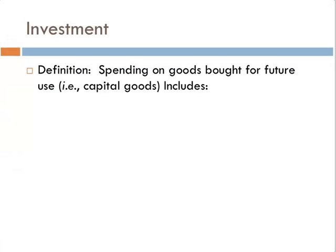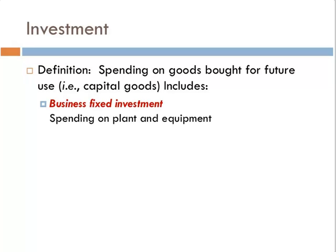So, definition: investment is spending on goods bought for future use — capital goods. This includes things like business fixed investment, which is spending on plant and equipment. For example, if 3M decides to build a new factory, that purchase of the materials and the construction of the factory — that's investment.